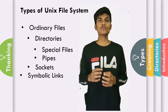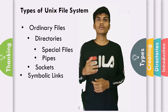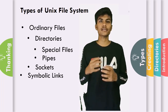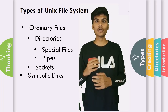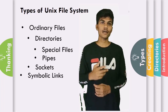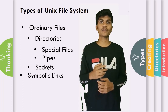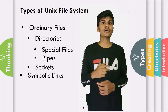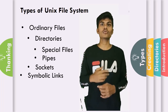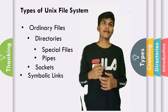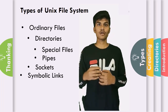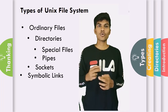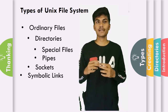UNIX allows you to link commands together using a pipe. The pipe acts as a temporary file which holds data from one command until it is read by another. A UNIX pipe provides one-way flow of data — the output of the first command sequence is used as input to the second command sequence. To make a pipe, put a vertical bar on the command line between two commands, for example: who | wc -l.